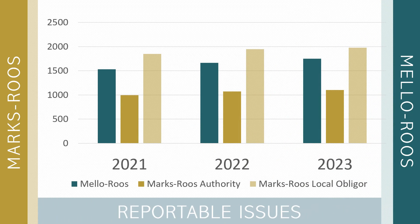This slide shows the number of reportable issues for 2021, 2022, and 2023. For each type of yearly fiscal status report, the reportable issues have increased every year. For the reporting period ending June 30, 2023, there are approximately 1,750 Mello-Roos issues, 1,100 Marks-Roos authority issues, and 1,975 Marks-Roos local obligor issues that have been flagged as reportable in the Data Portal and are due to be filed by October 30, 2023.